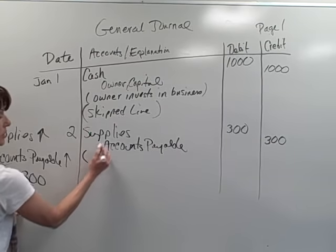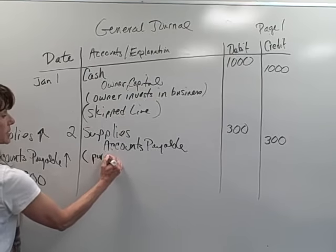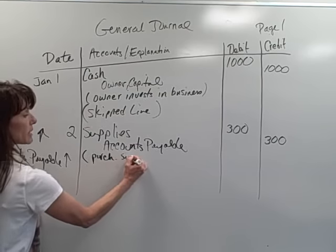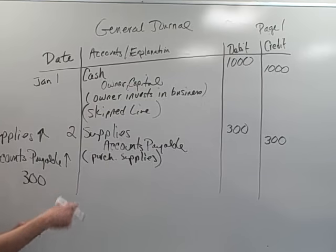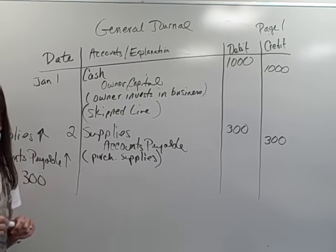I'm going to go ahead and put a little explanation. Purchase supplies. And I'm going to abbreviate in my explanation. And I can put down who I bought it from. Maybe I bought it at Walmart or whatever. So this is how you journalize. And I hope that was explained pretty well.